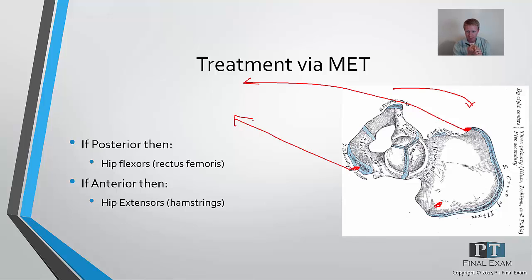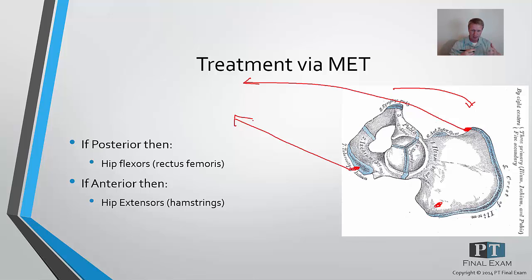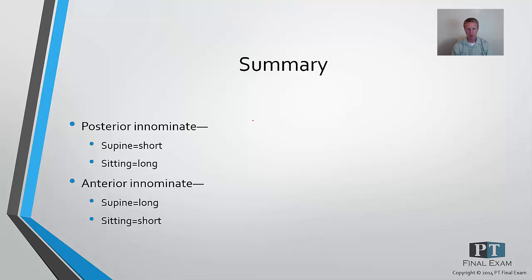The way you know which one to treat is based on their symptoms. Often they will be symptomatic on the side of the dysfunction. For example, if they're hurting at the left SI joint and their left leg appears longer in supine and shorter in sitting, that's anterior rotation — use the hip extensors to pull it into posterior rotation on the side of the dysfunction.